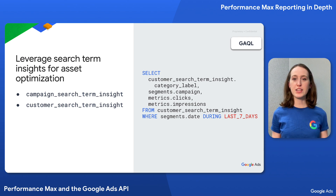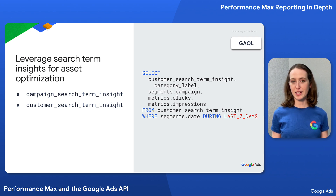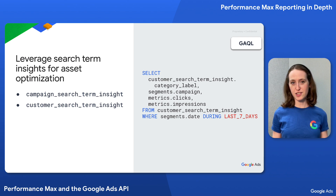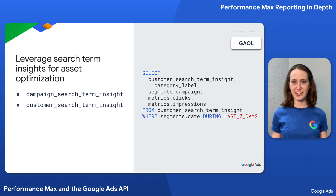Note that you can also get subcategory and search term data from this report, but not while segmenting by campaign. In other words, subcategory and search term specific metrics are only available in aggregate at the customer level.